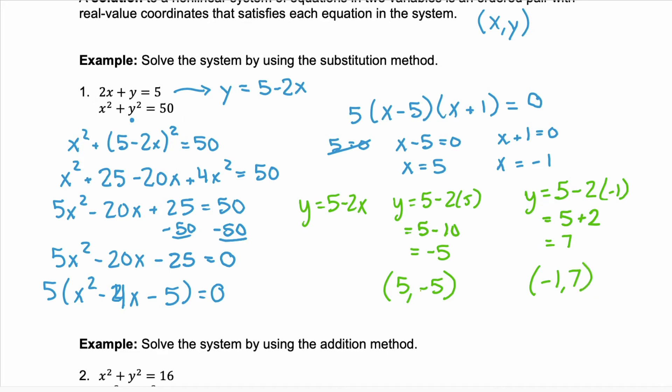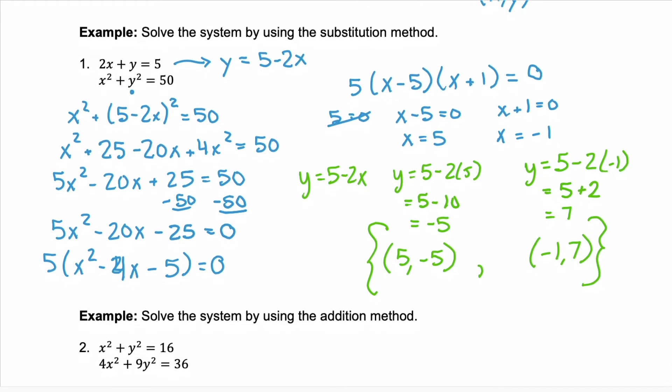Now you want to take both of these ordered pairs and substitute them back into both of these equations and verify that they check. I'll tell you that I have checked both of them, so they're both solutions. So we can put a comma between them and we put brackets around it to denote that these are both solutions to the system.